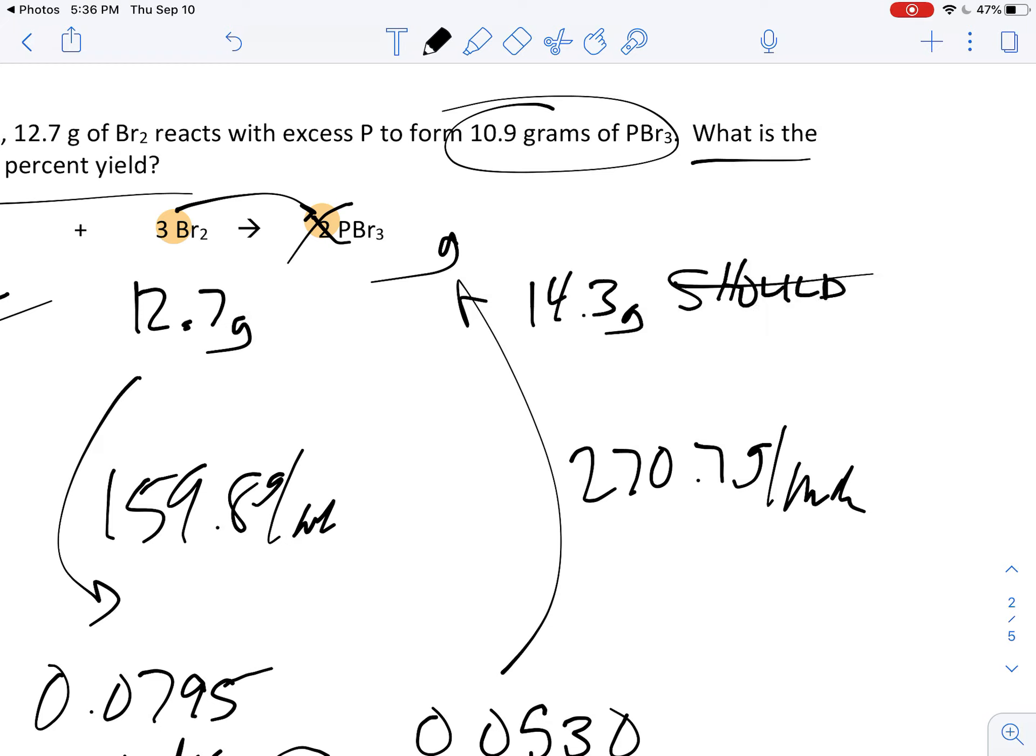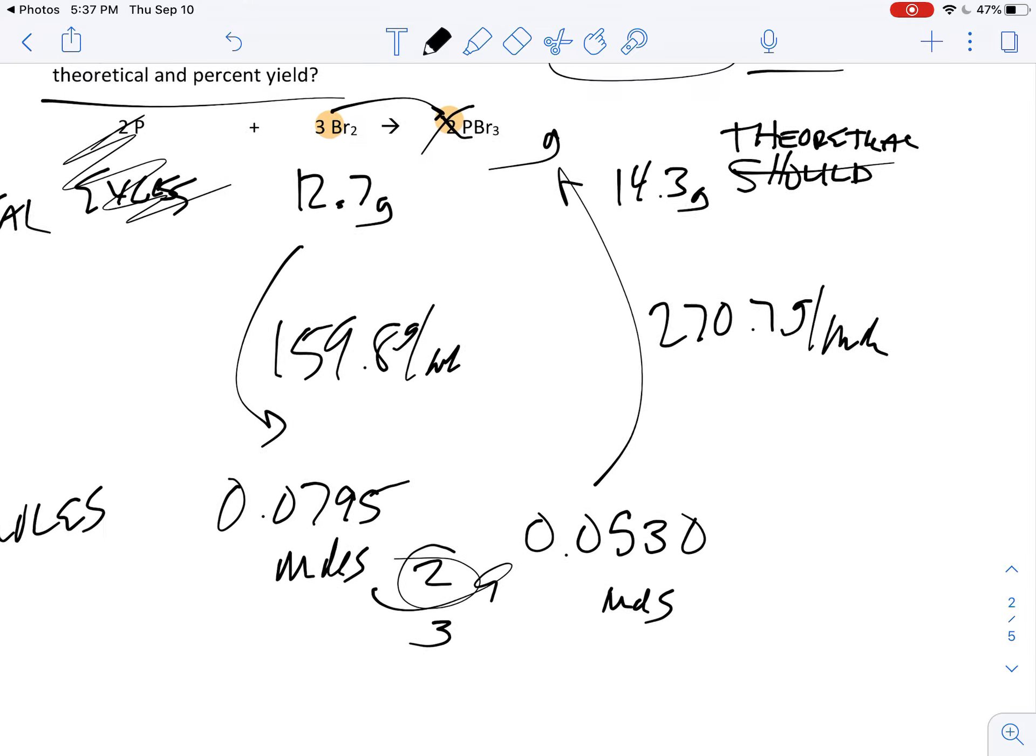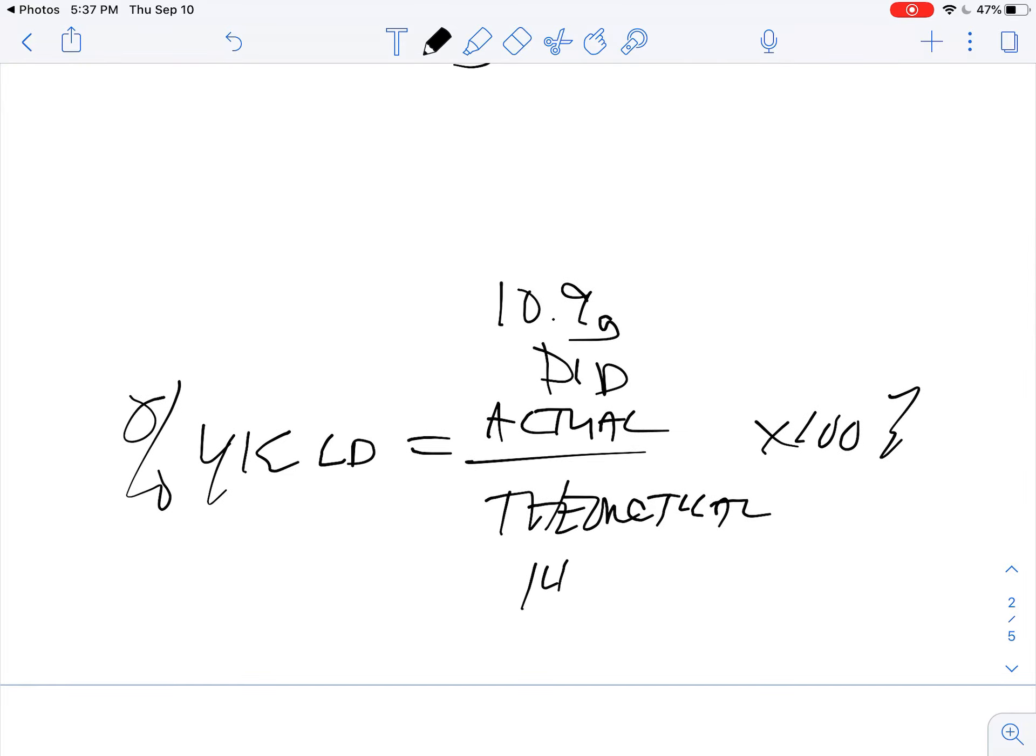The 14.3 is the theoretical if you want to sound sciency. You're supposed to get 14.3, you did get 10.9, which means when you divide those two out you get about 76 percent.